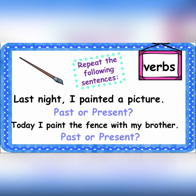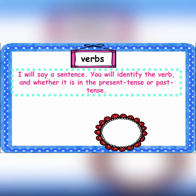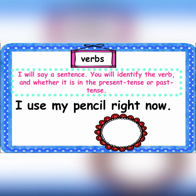Last night I painted a picture — we all know that's past tense. Today I paint a fence with my brother — which is present tense. Now I will say a sentence, and you will identify the verb and say if it is present tense or past tense. 'I use my pencil right now' — is it present or past tense verb?